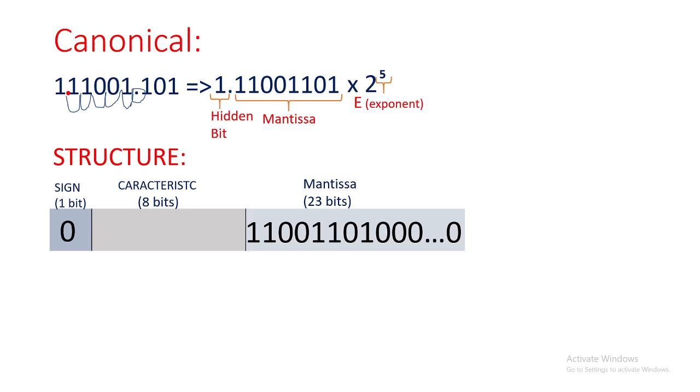Now we have to find the characteristic. In order to find the characteristic, we have to add exponent plus 127. 127 is the correction factor for single precision. The exponent is 5, so 5 plus 127 equals 132 in decimal.